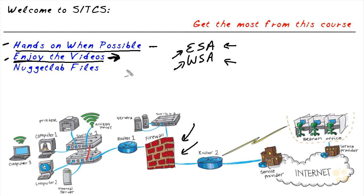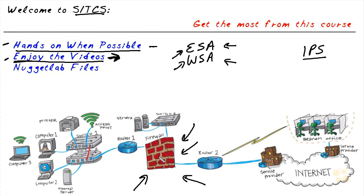I also want to give you a heads up regarding some of the technologies in this SITCS course. Some of the technologies are a little bit legacy — for example, legacy intrusion prevention systems, which are still part of the curriculum and still part of the certification. That's why I included them here. And some legacy options regarding modules that go into the ASA. I've included those as part of this course because they are part of the CCNP Security certification as of this recording. So if there ever comes a time where you're wondering why I'm including that, the reason is because it's important for your certification if that's one of your goals.